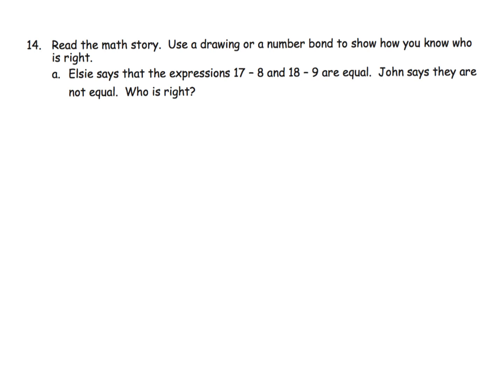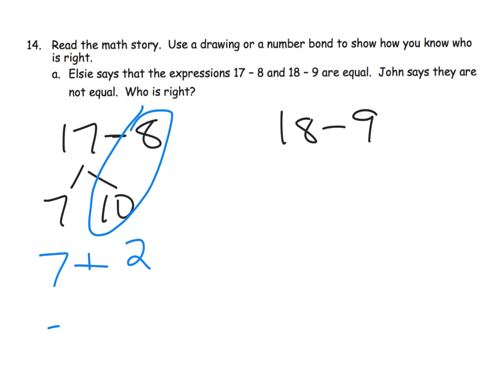We're supposed to read the math story and then use a drawing or a number bond to show how we know that we're right. So it says Elsie says that the expressions 17 minus 8 and 18 minus 9 are equal. John says they are not. So who's right? Well, let's do some subtraction to find out. I'm going to use that number bond and subtract from 10 method here. So 10 minus 8 is 2 plus the 7 gives us 9.